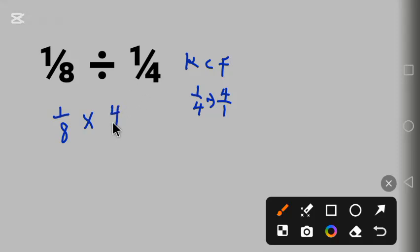We flip this fraction, it's also called reciprocal. Now 1 times 4 is 4, 8 times 1 is 8.